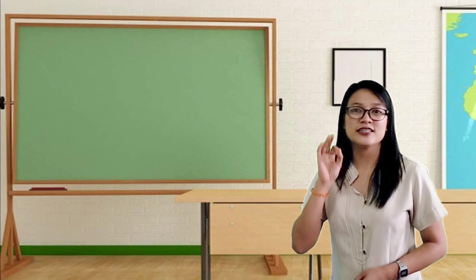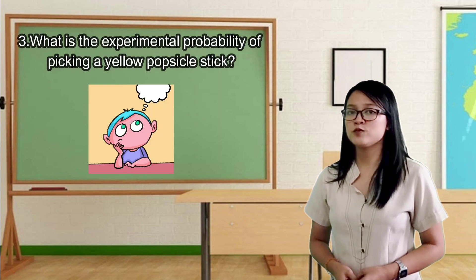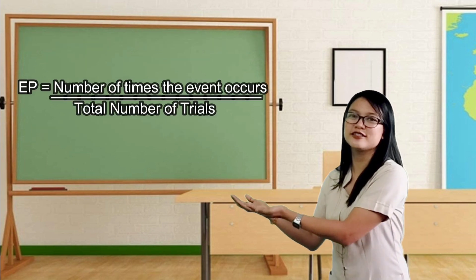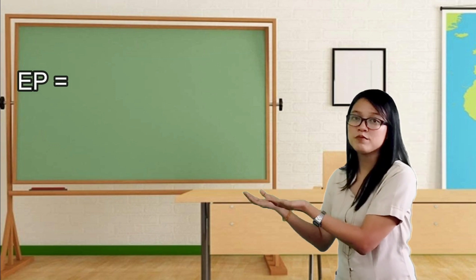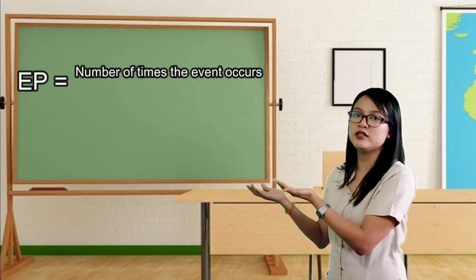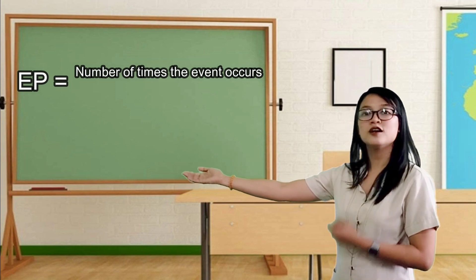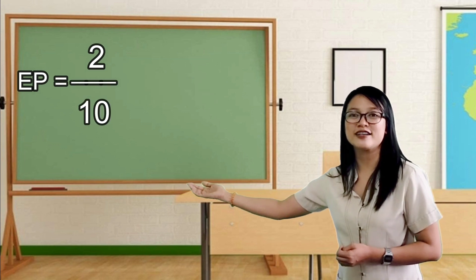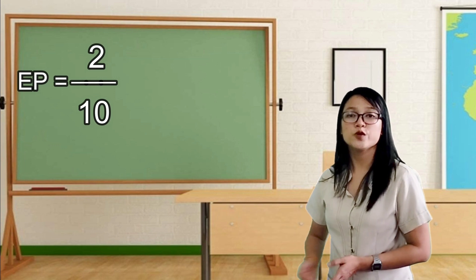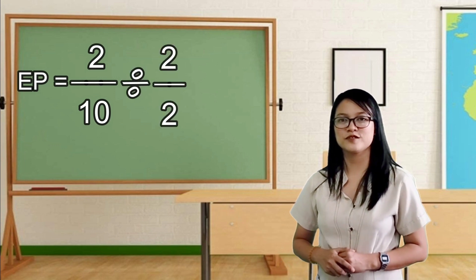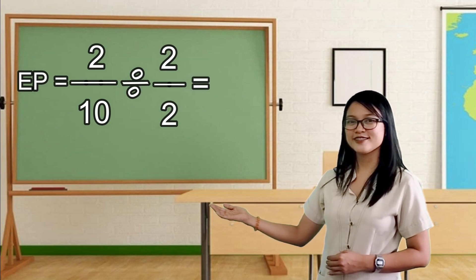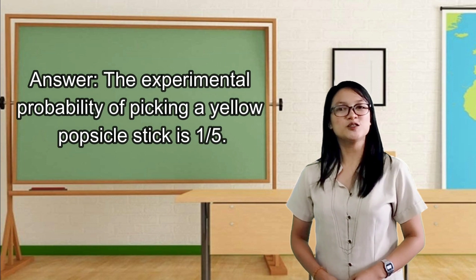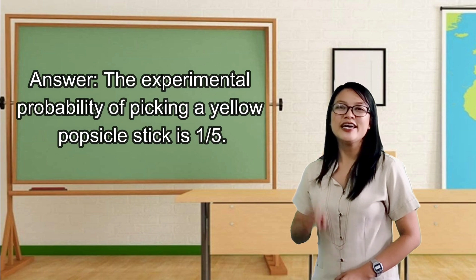The last question is: what is the experimental probability of picking a yellow popsicle stick? We are now going to apply the formula. Experimental probability is equal to the number of times the event occurs, which is 2, over the total number of trials, which is 10. We have two-tenths. We are now going to get its lowest term. The answer is one-fifth! Congratulations!